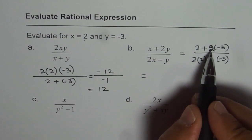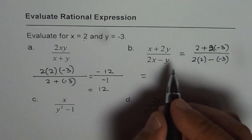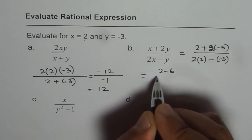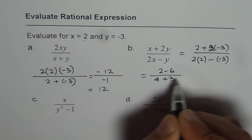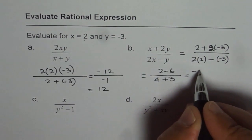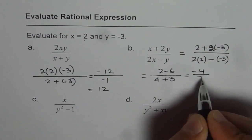So, that will give us 2 times minus 3 is minus 6. So, we get 2 minus 6 in the numerator and here we get 4 plus 3. So, we have minus 4 over 7 as our answer.